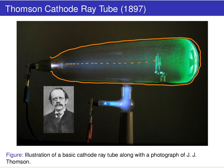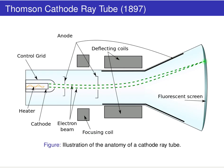J.J. Thomson used this concept and did a really cool experiment. When you heat up these atoms and the sample, you get little particles emitted — those are the ones whose paths he traced on the cathode ray tube.